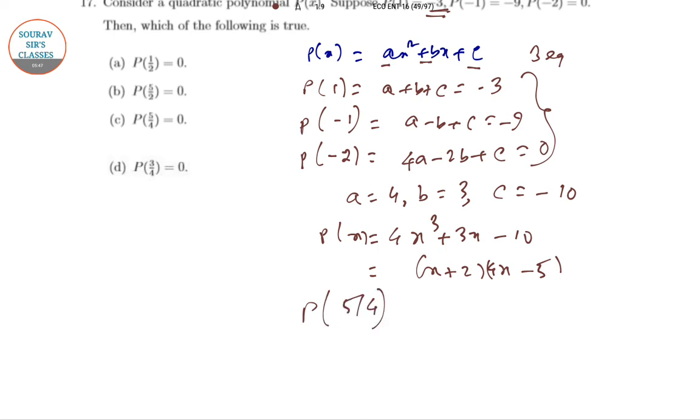So now P of 5 by 4, all we have to put and check it with P of 5 by 4, P of 3 by 4, P of 5 by 2, and P of 1 by 2. So whichever is giving you 0 is the answer in this case.